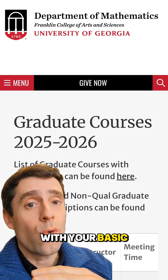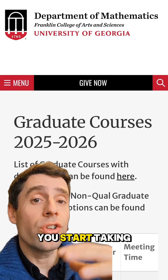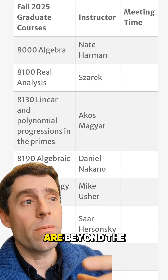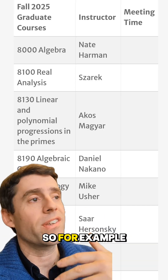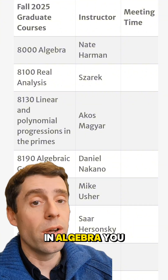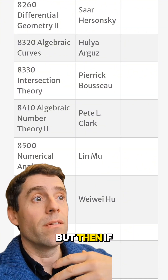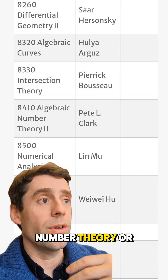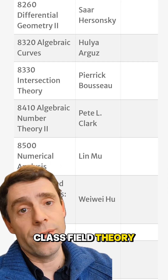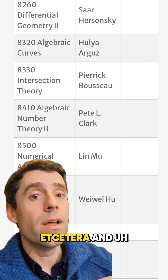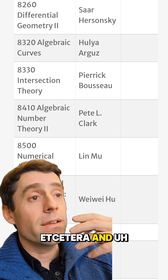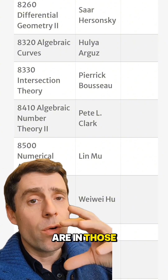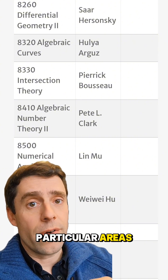Once you're done with your basic coursework, you start taking more advanced courses on topics that are beyond the fundamentals. For example, in algebra, if you're going into number theory, you would take algebraic number theory, or class field theory, or local fields, etc. And that way you start meeting some professors that are in those particular areas.